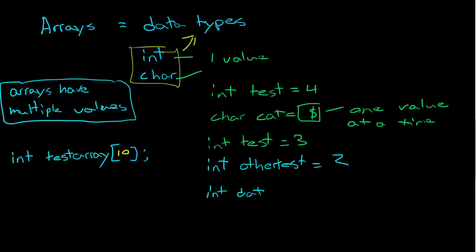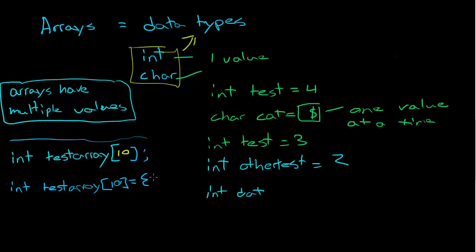If we wanted to declare what those values are, there are two ways. One is when we first declare it — like when you first declare an integer — you can go: int test_array[10] equals, and then you use the curly braces and list the values. Let's say I want the first value to be ten, the second to be two, the third to be three. So int test_array with ten possible values equals those first three values.